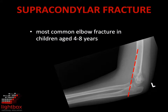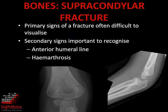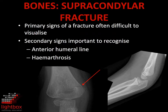Supracondylar fractures of the distal humerus are the most common fractures in children aged four to eight. Once alignment has been assessed, the bones are the next region to be interpreted for signs of a fracture. Look for cortical disruption or a linear lucency, though these are sometimes difficult to visualise. The secondary signs of loss of the normal anterior humeral line alignment and signs of a haemarthrosis are often important in establishing a plain film diagnosis.